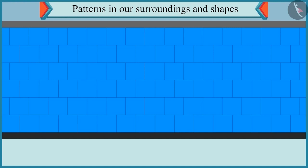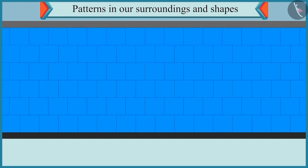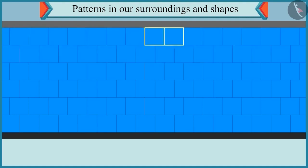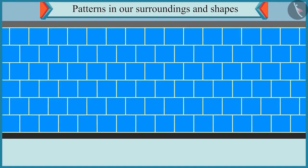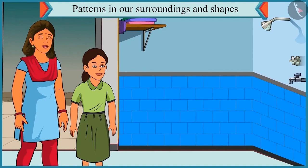Oh yes. Here in the first row, the tiles are laid in a uniform manner. And in the second row, the tiles are placed in between two tiles above it. And this pattern is repeated again and again. So this is a pattern, isn't it? Yes, Chutki. Would you like to know more about the patterns? Yes, Mummy, I want to know more about the patterns.